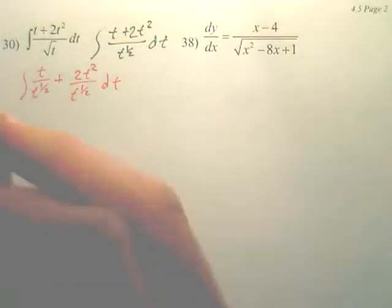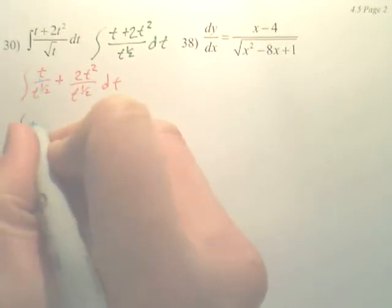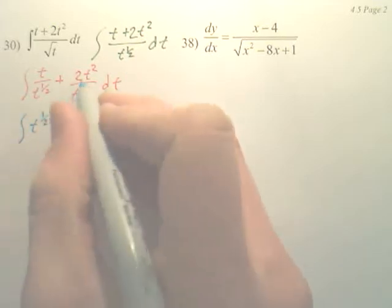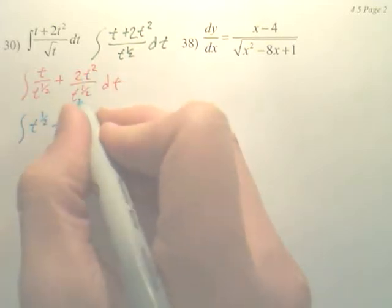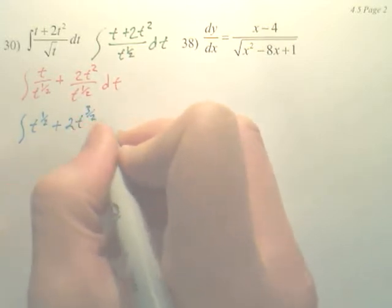Which that will be reduced to t over t to the 1 half is just simply t to the 1 half plus t squared divided by t to the 1 half would be 2t to the 3 half.